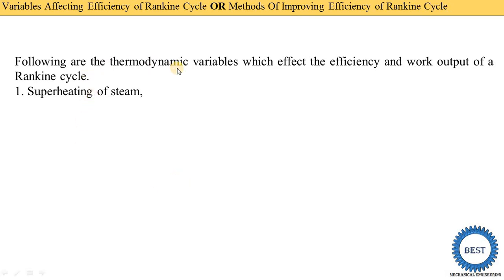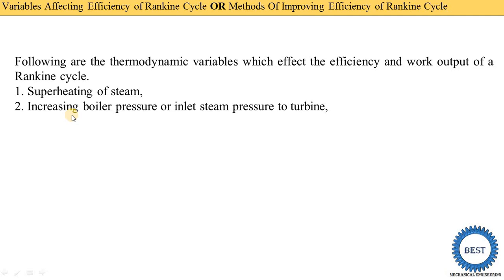The following are the thermodynamic variables which affect the efficiency and the work output of a Rankine cycle. Efficiency depends on two factors: work output and the amount of heat supplied. The three methods are: first, superheating of steam — steam leaving the boiler is heated further before being supplied to the turbine. Second, increasing the boiler pressure (inlet steam pressure to the turbine). Third, reducing the condenser pressure. Other methods like reheating and regeneration also improve efficiency, and I will make separate videos for those.